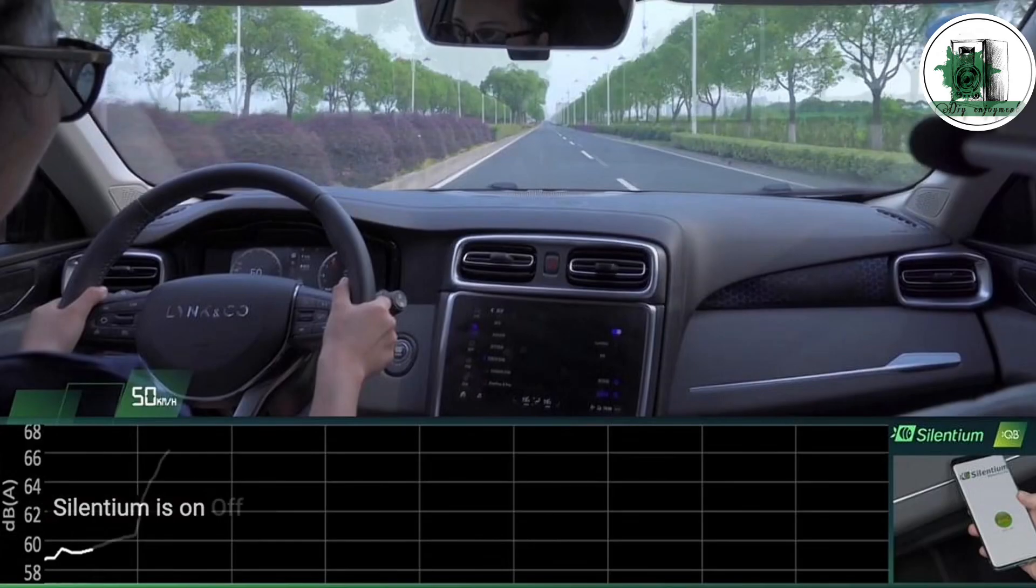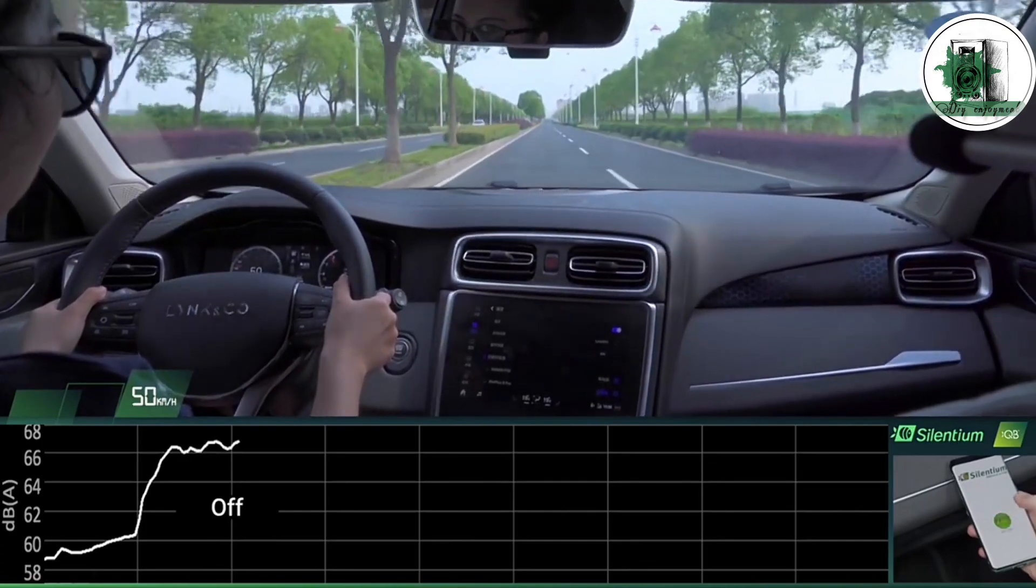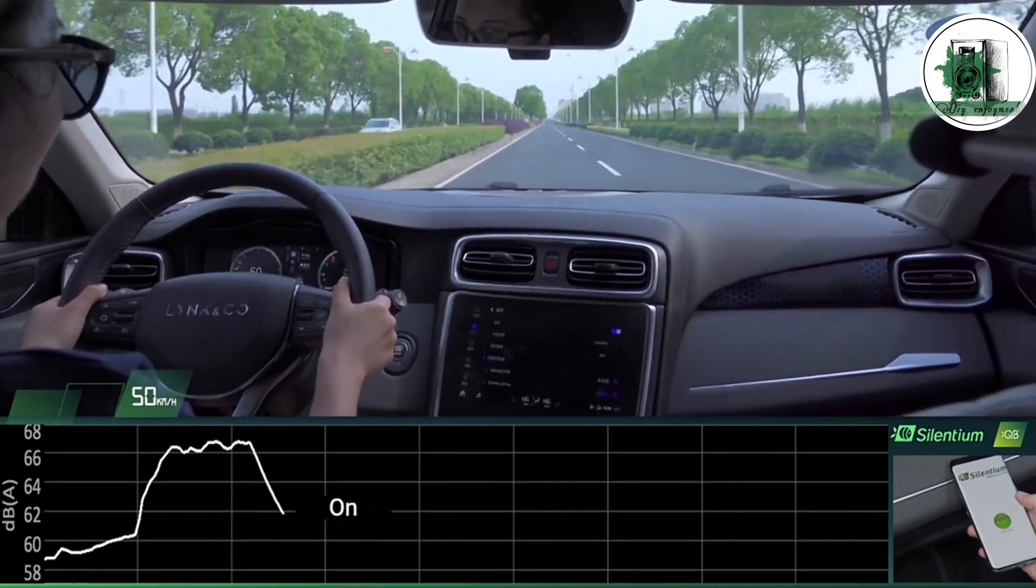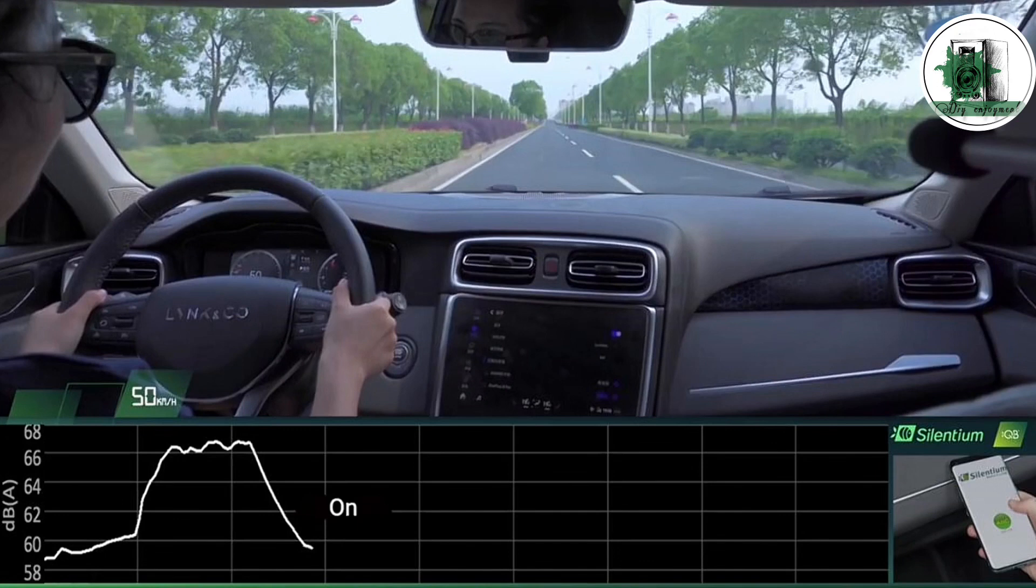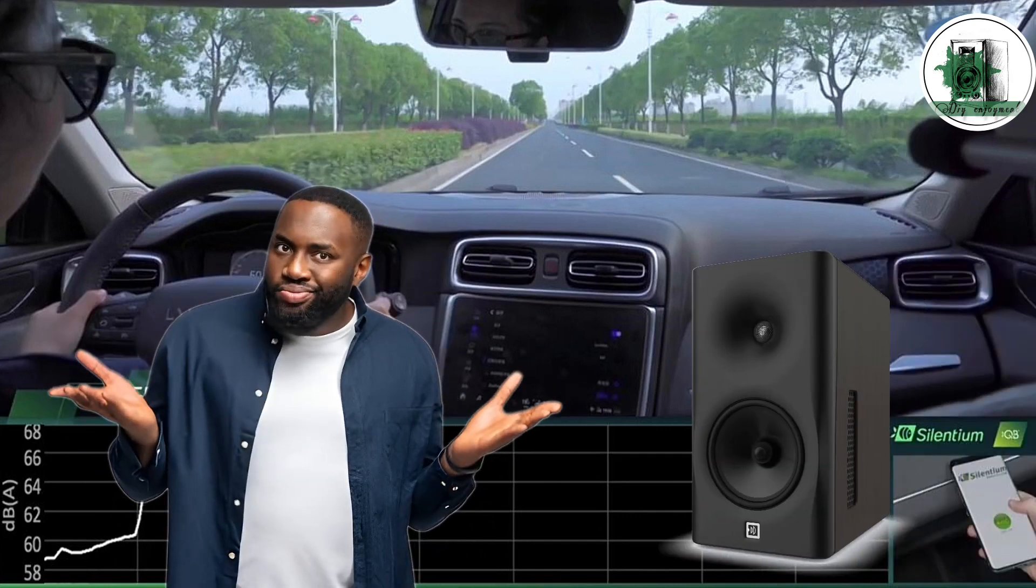Watch this short video. As you can see, the noise level drops after activating the ANC system. You might be wondering, what does this have to do with the cardioid speaker, or how are these two systems related?